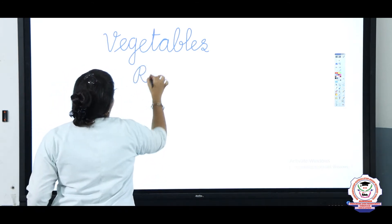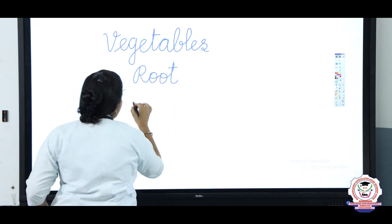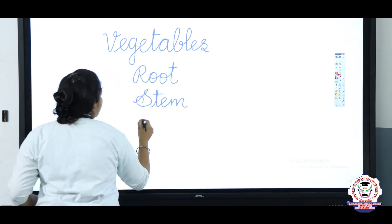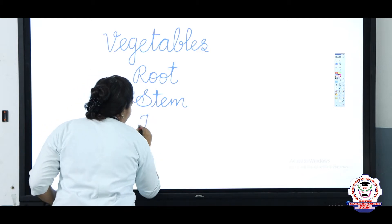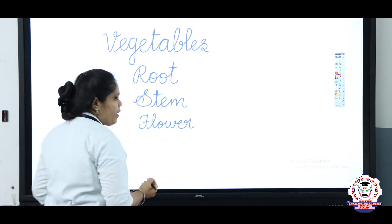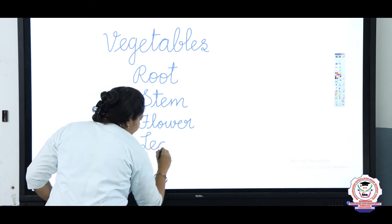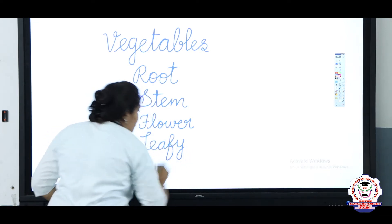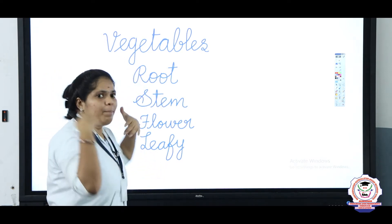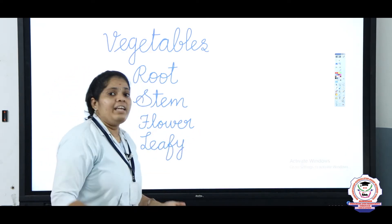Some vegetables may come from roots and some may come from stem — S-T-E-M, stem — and R-O-O-T, root. Some may come from flower — F-L-O-W-E-R, flower — and some may come from leafy vegetables — L-E-A-F-Y, leafy. So parts of the plant such as root, stem, flowers, and leafy vegetables can all be used as vegetables.